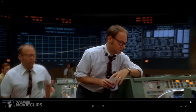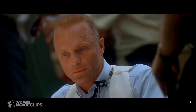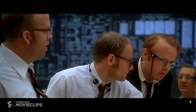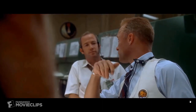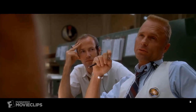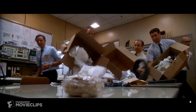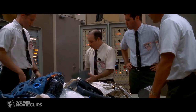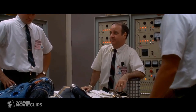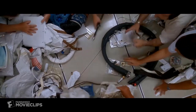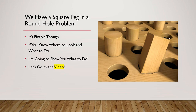[Apollo 13 clip]: 'We have a situation brewing with the carbon dioxide... the scrubbers on the command module take square cartridges, the ones on the LEM are round... I suggest you gentlemen invent a way to put a square peg in a round hole, rapidly... we've got to find a way to make this fit into the hole for this, using nothing but that.' That's our square peg in a round hole problem, as demonstrated by Apollo 13.